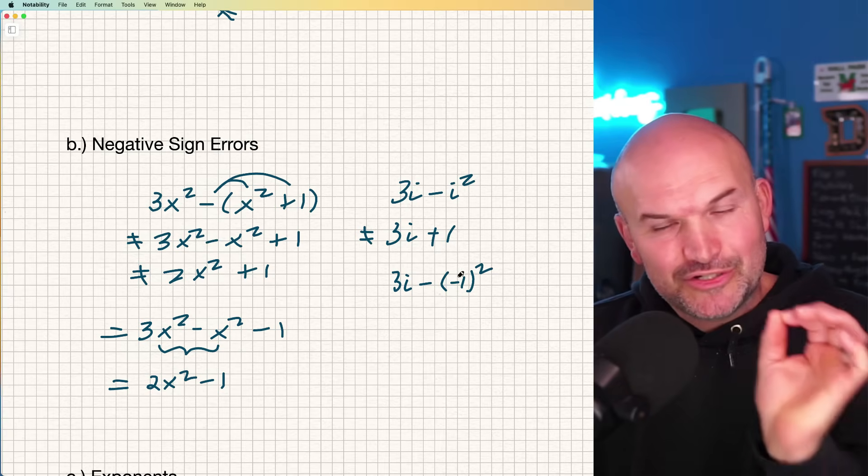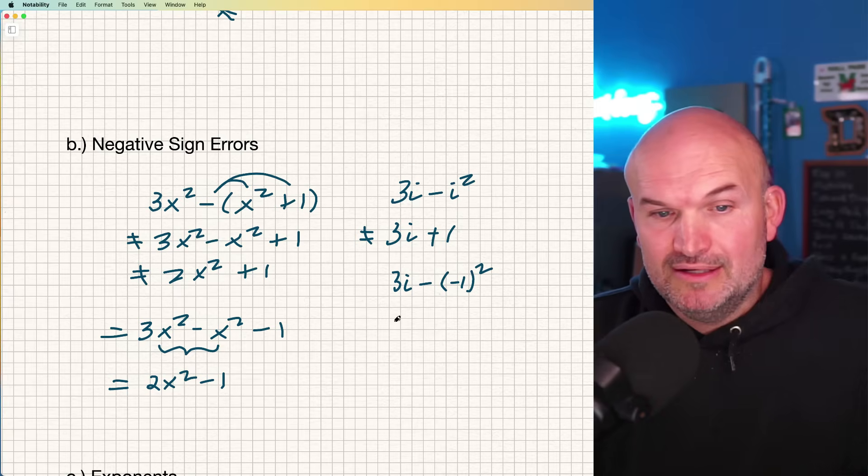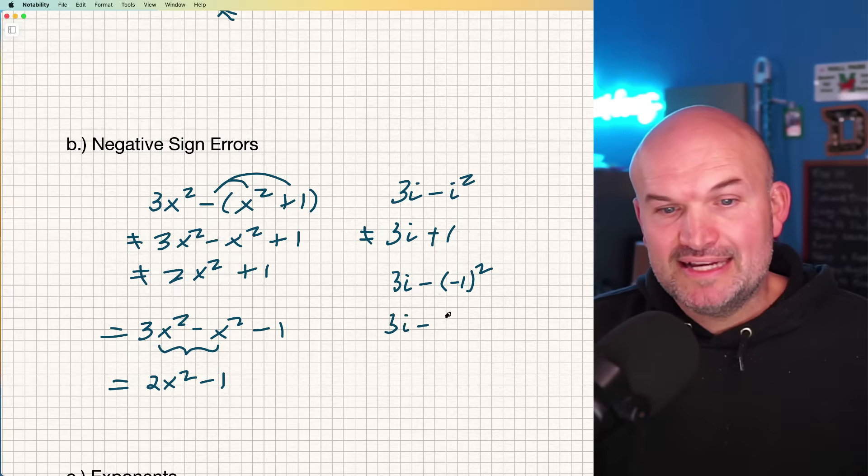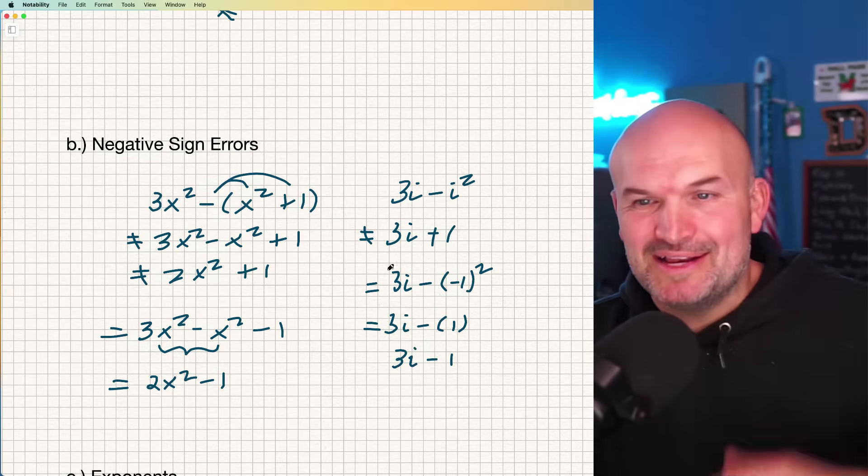Make sure you're using parentheses because negative one squared is positive one, but we're still subtracting it, right? So it's 3i minus a positive one, which we can rewrite as 3i minus one. So I wrote the correct answer back in there.